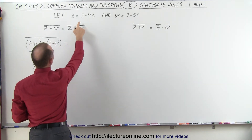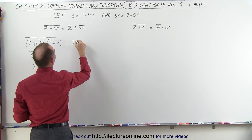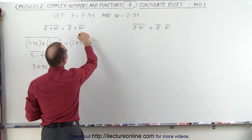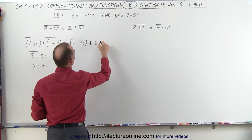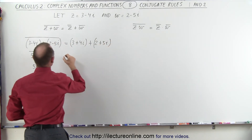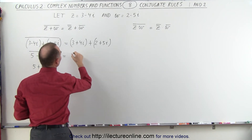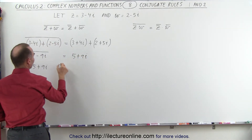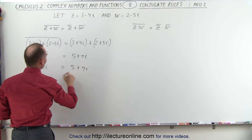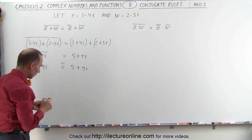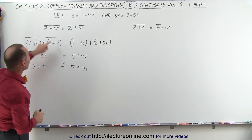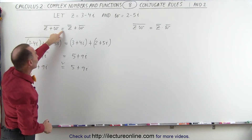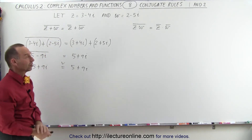Now let's compare that to the right side. On the right side we'll first take the conjugate of z, that gives us 3 plus 4i, and we're going to add that to the conjugate of w which is 2 plus 5i. This will be equal to 5 plus 9i, and sure enough that is indeed equal to the left side. So we confirm that when we first add the two complex numbers together and then take the conjugate, that equals the sum of the conjugates of the two complex numbers.